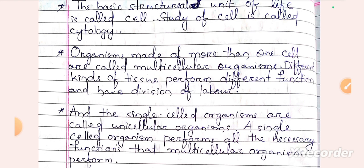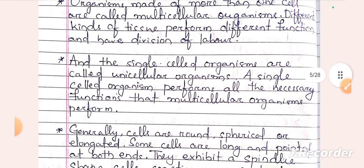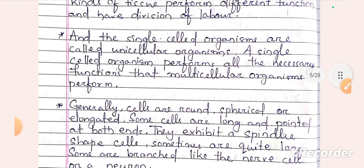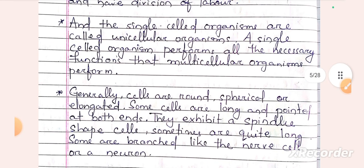Organisms made up of more than one cell are called multicellular organisms. Multicellular organisms have different kinds of tissues with different functions, and tissues form organs and organ systems. Some organisms consist of only a single cell — these are called unicellular organisms, where the cell itself performs all life functions.